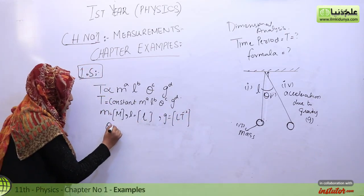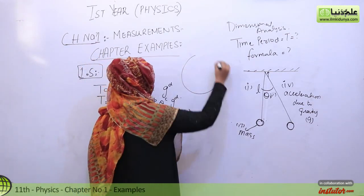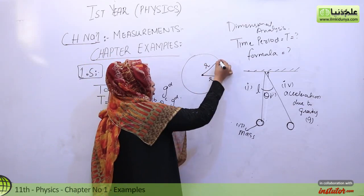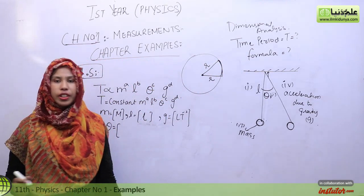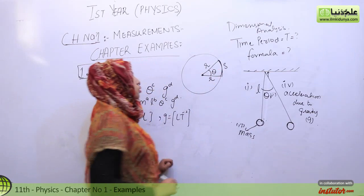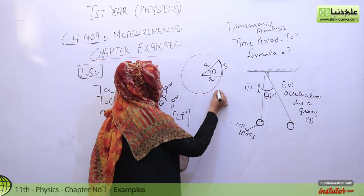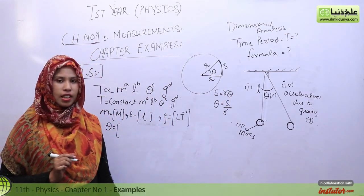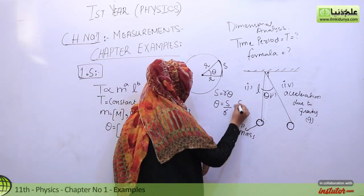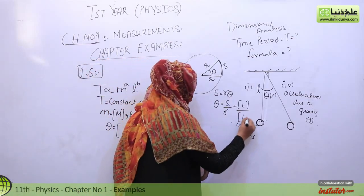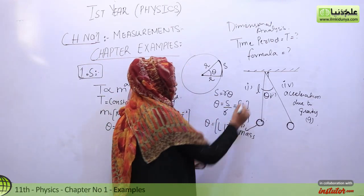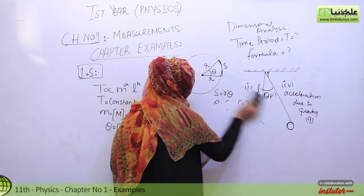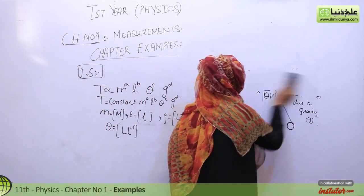Theta's dimension needs special consideration. Consider a circle with radius R. When we mark an arc S along the circumference, the angle theta in radians equals S divided by R. So theta = S/R, where S is arc length with dimension L, and R is radius with dimension L. Therefore the dimension of theta is L/L = L⁰, which is dimensionless. So theta's dimension effectively gives us L⁻¹ in the power c, meaning the L and L⁻¹ will cancel each other out.